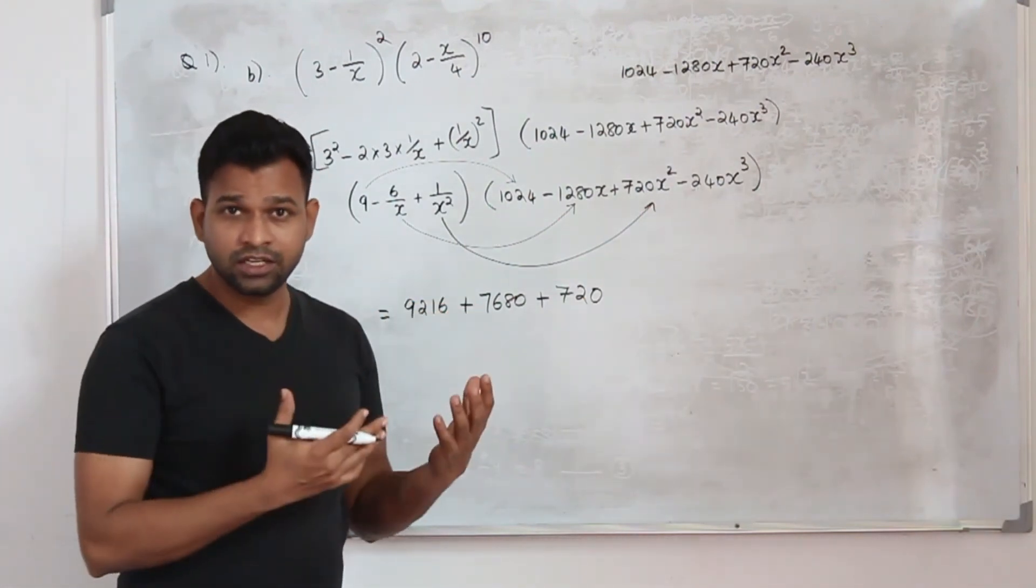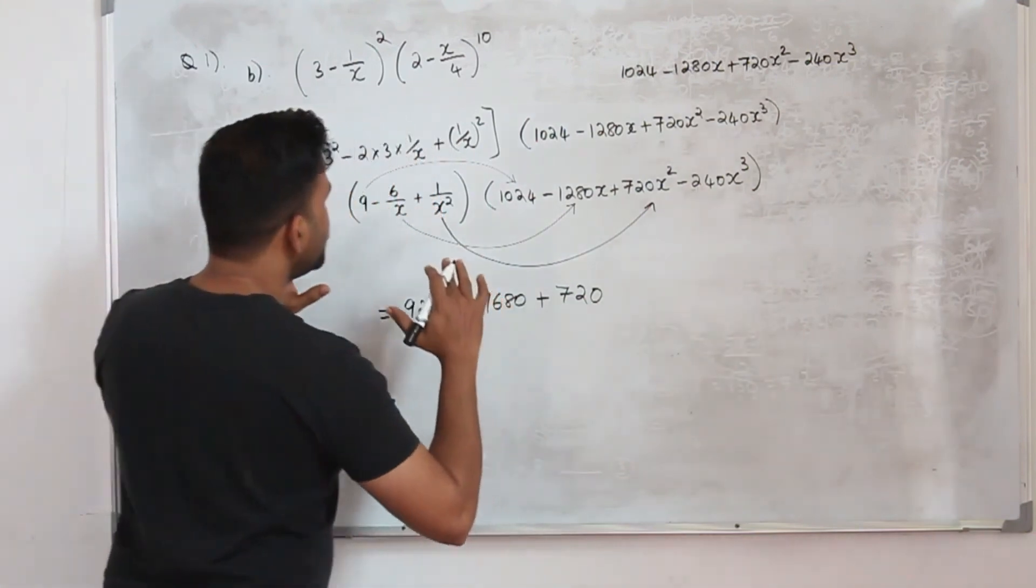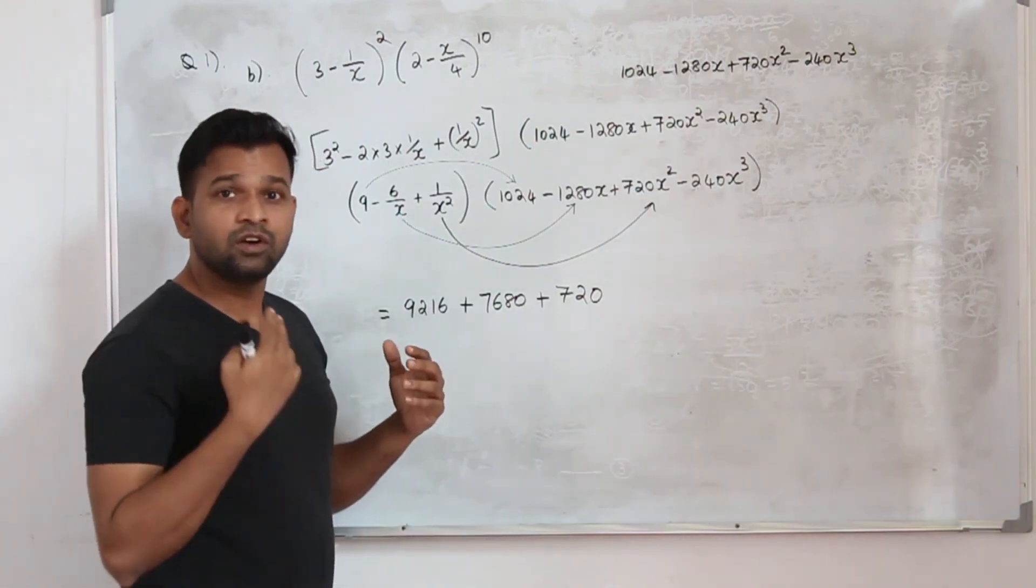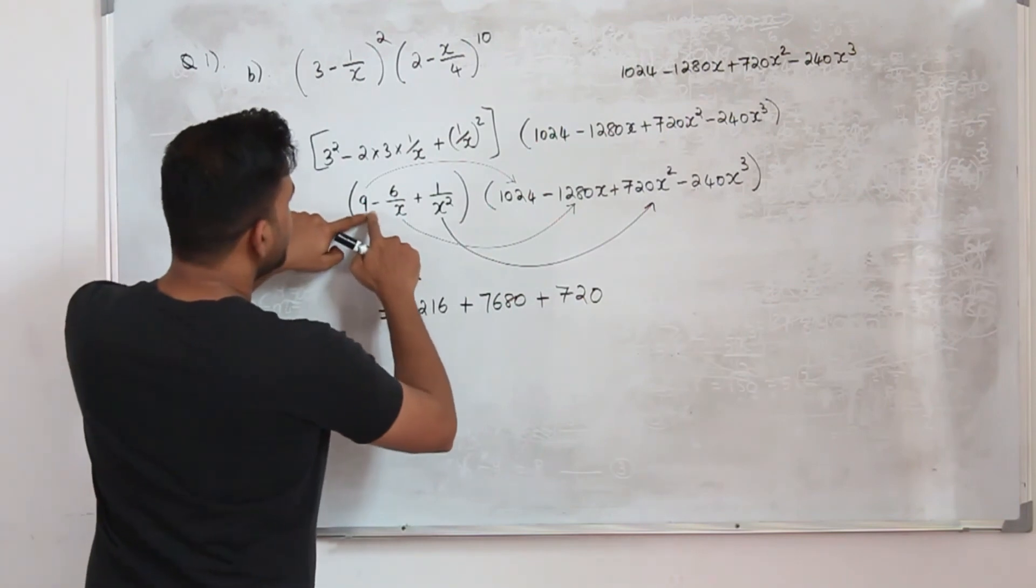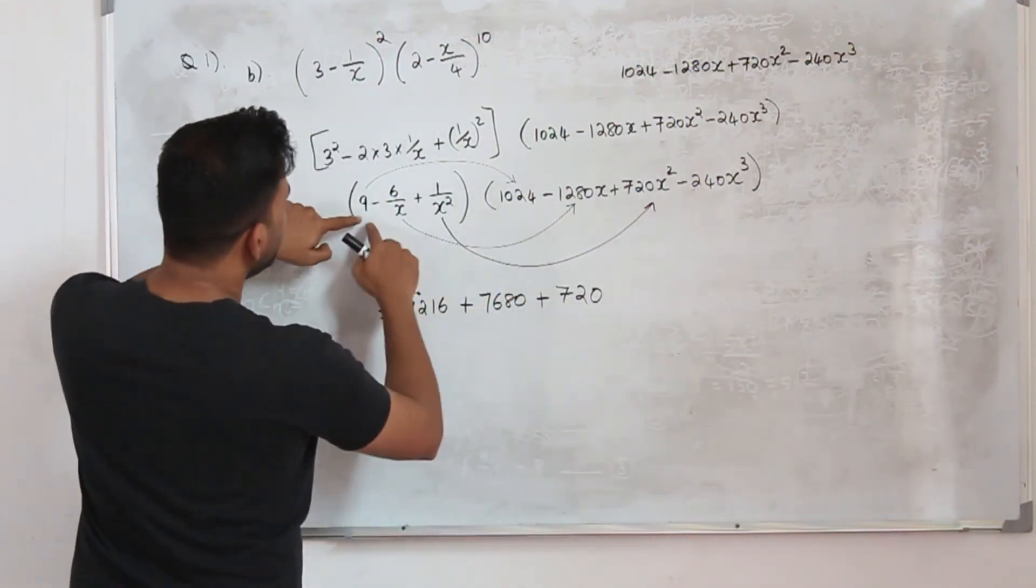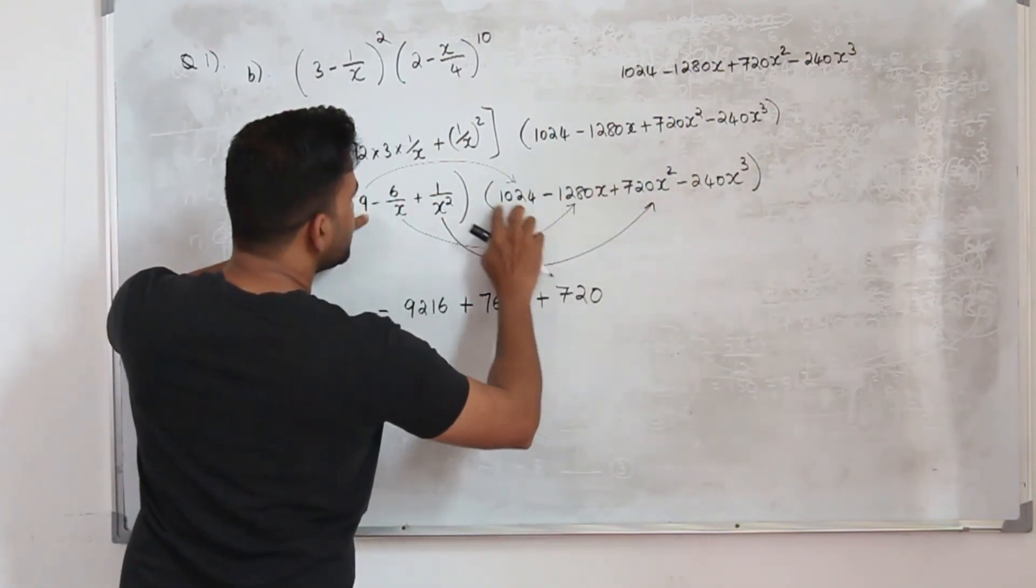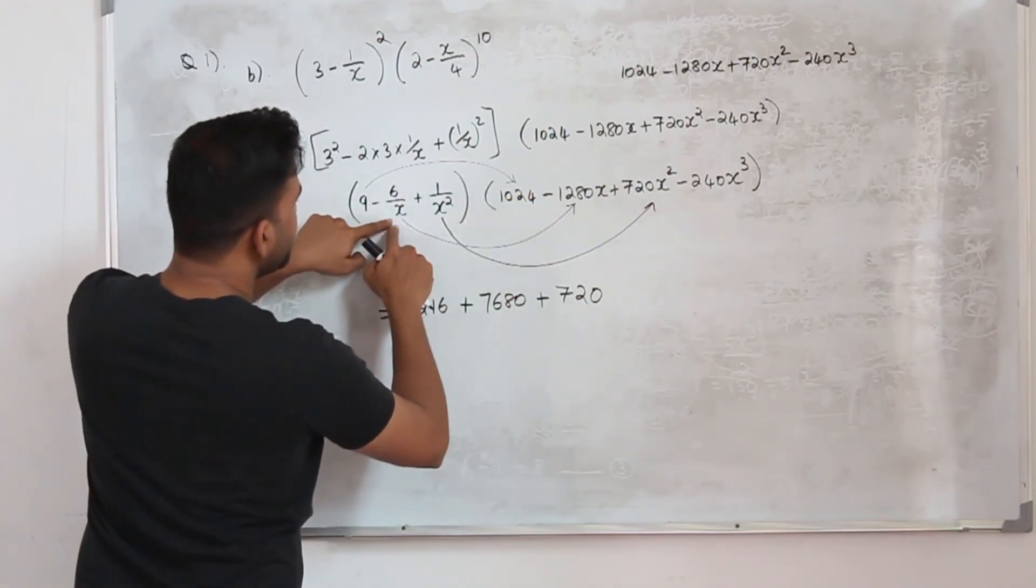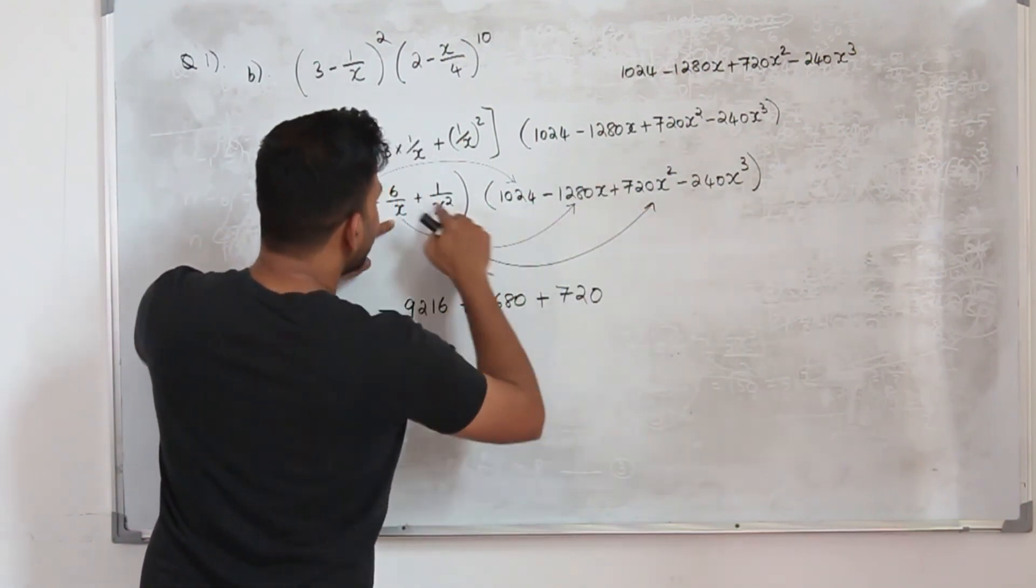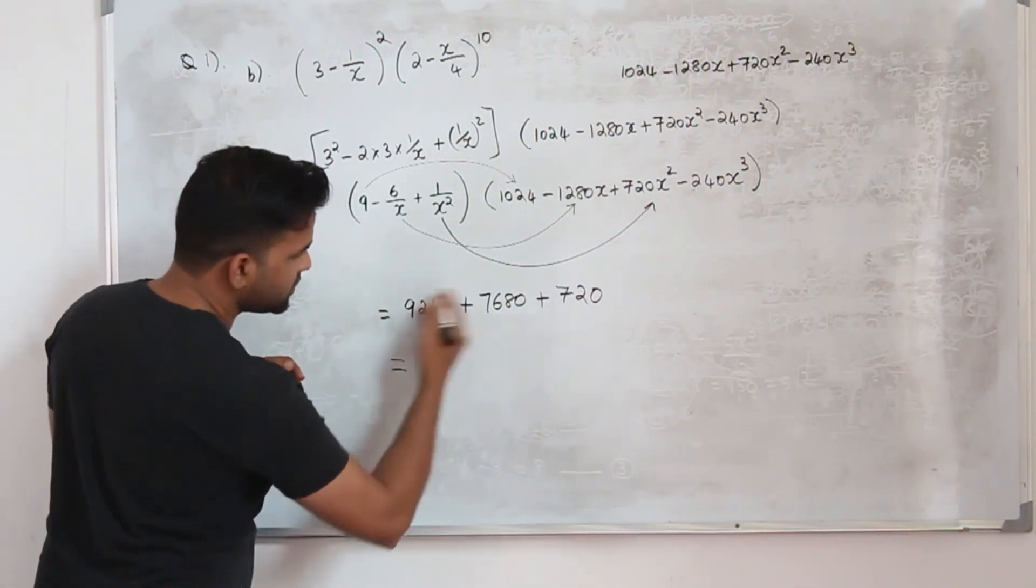So this is what we do when they ask for a constant term or the coefficient of x or coefficient of x^2. You don't need to multiply everything. You always need to consider the terms one by one and check which term can be taken up without multiplying everything. In this case, you don't need to multiply all the terms by each and every term here. That's a tedious process. But by looking at it, when you take 9 and multiply everything, the three terms will have x in it. The only constant term is 9 into 1024. Then if you take -6/x and multiply everything, you will have x here, x here, x here, but here the x will be cancelled. So that's considered a constant term. And same for this also.